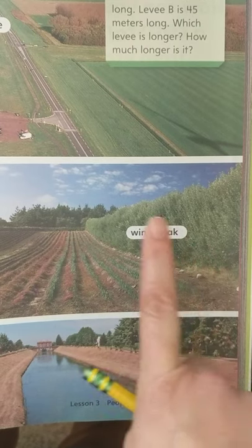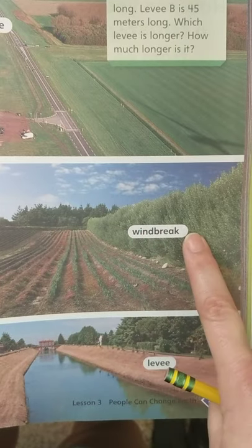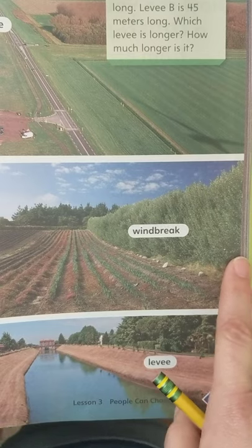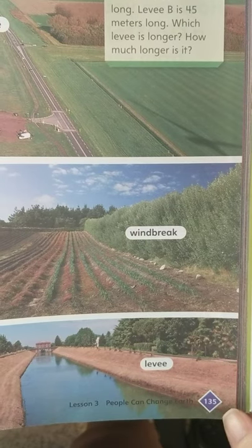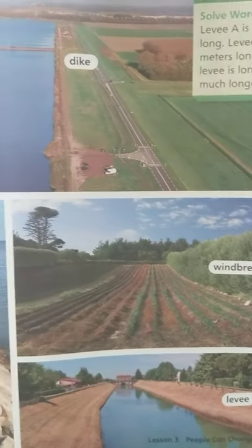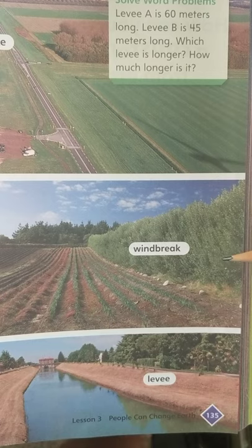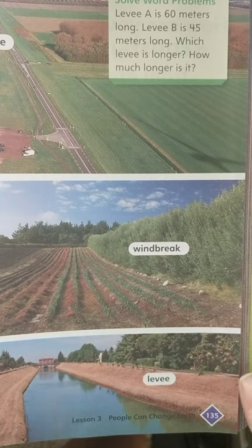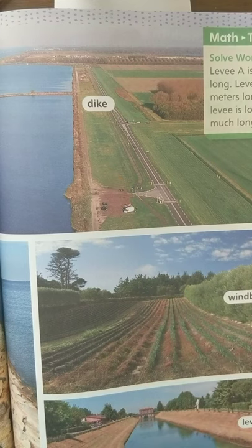The windbreak — those rows of bushes — means the wind will have a hard time getting past all those plants if it's blowing in that direction. That's why they plant a big long row to prevent that from happening. What is a windbreak used for? It's used to block the wind. Why do people make dry land out of land that used to be underwater, like with a dike? One example is that they use it for farming.